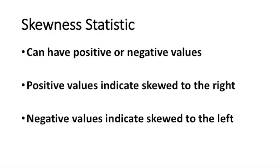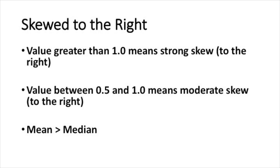There's a skewness statistic you can calculate in Excel to give you a more precise idea of the skewness of a distribution. It can have positive or negative values. Positive values tell you the histogram is skewed to the right; negative values tell you it's skewed to the left. A positive value exceeding 1 means strong skew, while a value between 0.5 and 1 means moderate skew. And of course, the mean exceeds the median when a histogram is skewed to the right.